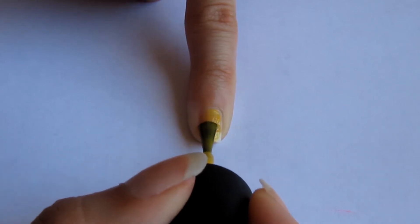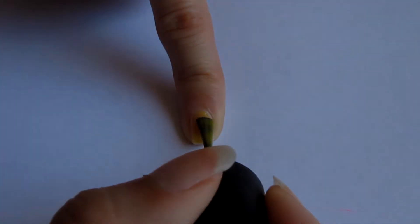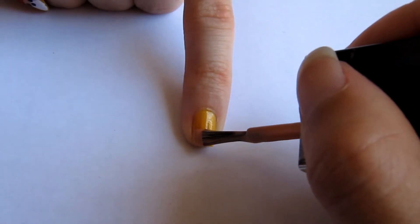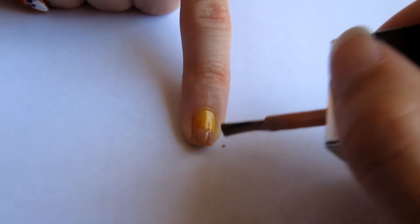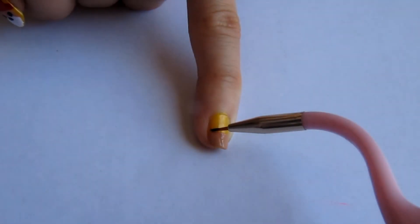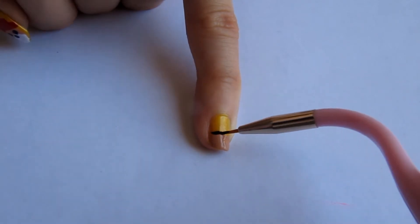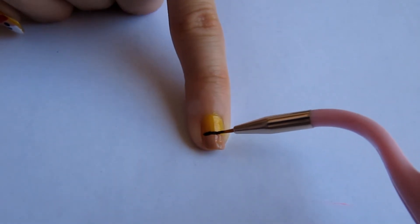Finally, for your pinky, I'm going to do Paddington's little suitcase. Apply a base coat, then paint on a layer of yellow polish. Using the beige color from earlier, stripe across the bottom half of the nail.